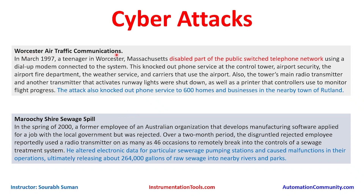The first example is the Worcester Air Traffic Communication attack. In March 1997, a teenager in Worcester, Massachusetts disabled part of the public switched telephone network using a dial-up modem connected to the system. This knocked out phone service at the control tower, airport security, the airport fire department, the weather service, and carriers using the air force base. The tower's main radio transmitter, a transmitter that activates runway lights, and a printer that controllers used to monitor flight progress were all shut down.